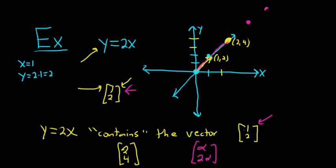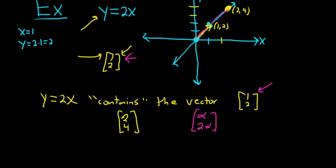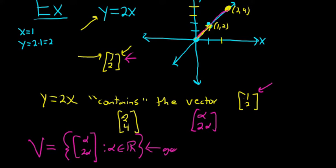This leads to some interesting thoughts. You could think of the set V as the set of vectors (alpha, 2alpha). If you graph all of these vectors where alpha is a real number, you would basically get the graph of the line. You can think of the graph of y equals 2x as the graph of this set of vectors, which is kind of interesting.